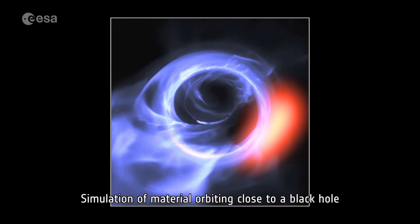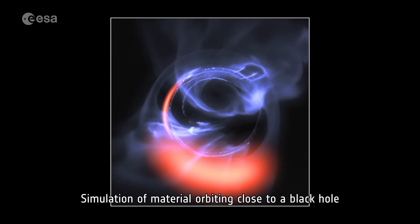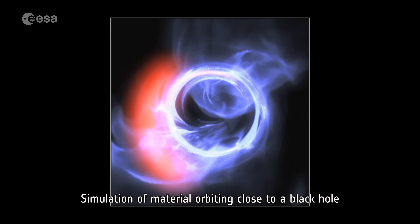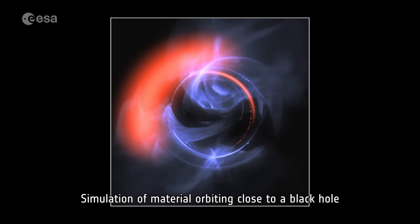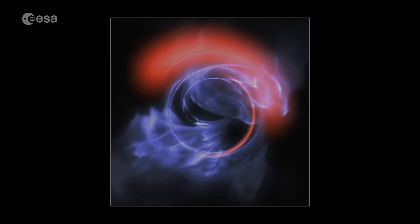A hundred years later, gravitational waves were discovered — a major prediction of the theory. Then just last year, the gravitational redshift from the black hole in the galactic center was detected with telescopes at ESO. This rounds up the hundred-year history of the general theory of relativity.